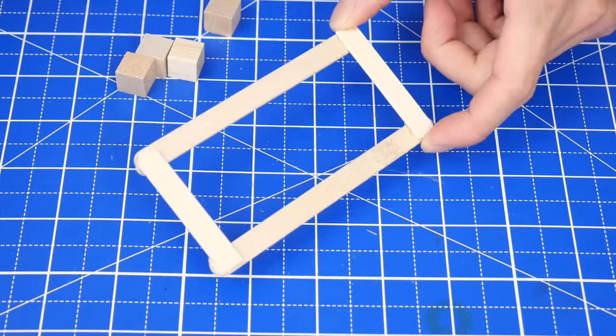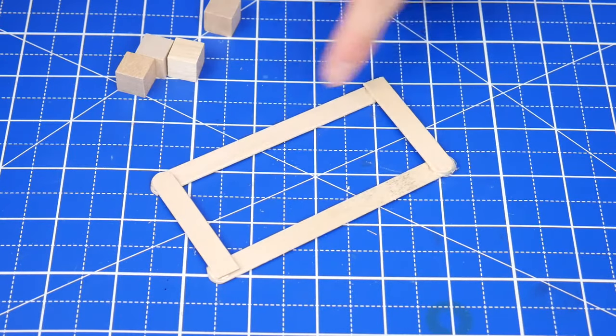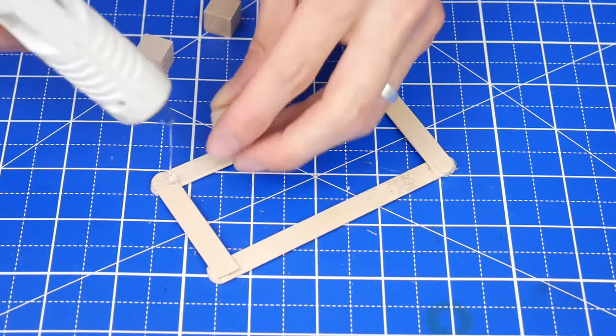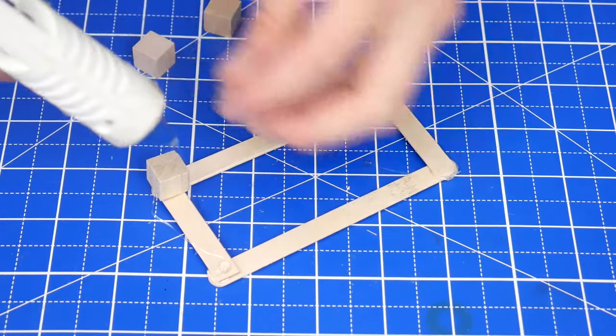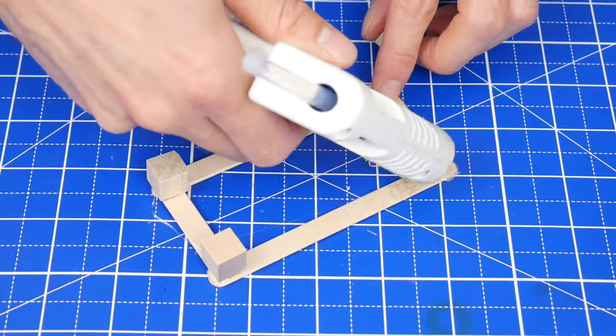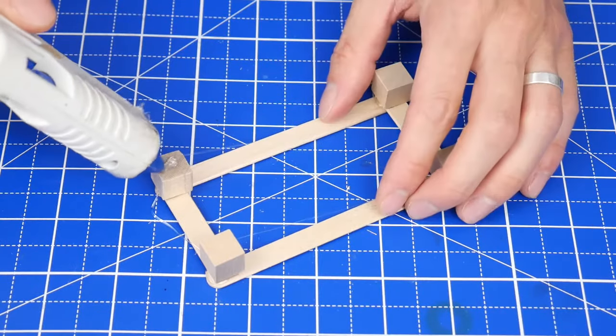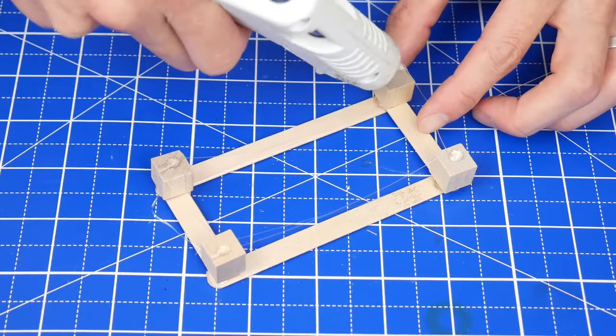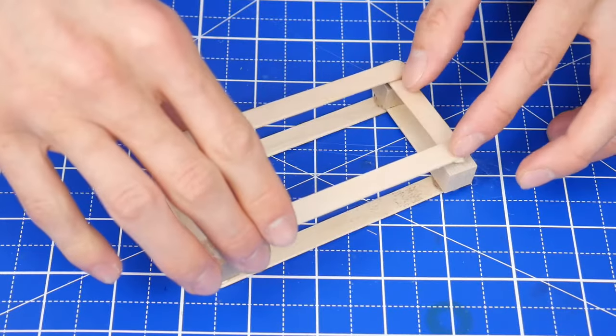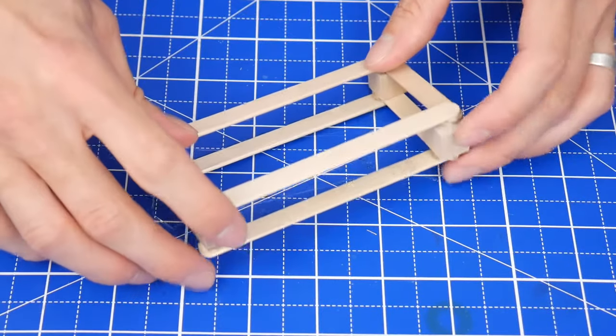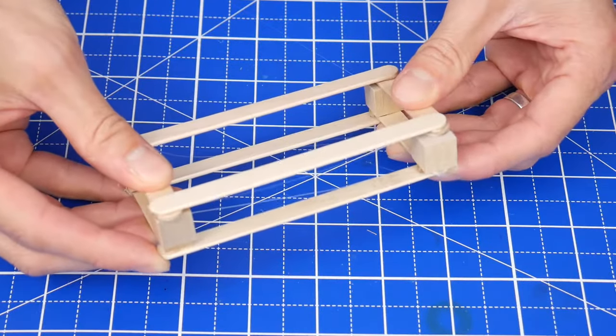Next, start the base of the catapult by gluing craft sticks into a rectangle like this, and then gluing cubes onto each corner. Then after that, glue on another rectangle on top of those cubes. This structure of layering cubes in between craft sticks will make the base really sturdy.